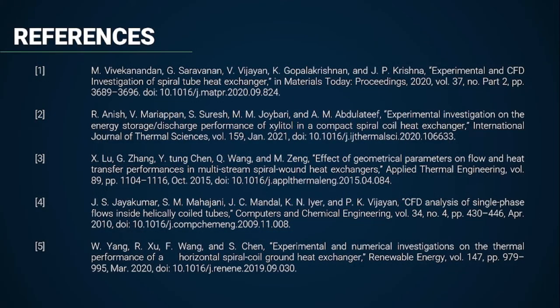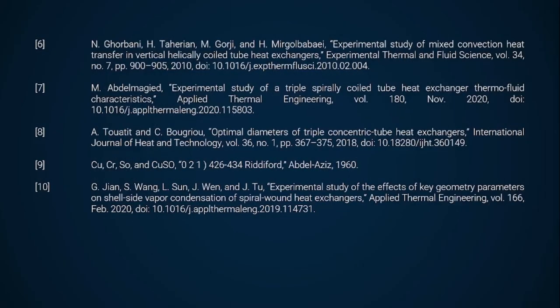Before ending the presentation, we go over the references used for this current semester, which mostly consist of past and recent research papers. All these papers cover the main references for design, tube diameter arrangement, and the amount of flat spiral winding needed for the spiral tube heat exchanger.